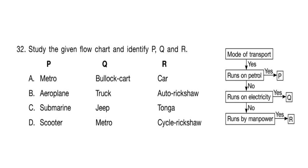Question 32. Study the given flow chart and identify P, Q and R. The correct answer is Option D: P can be a scooter, Q that runs on electricity is the metro, and R that runs by manpower is the cycle rickshaw.